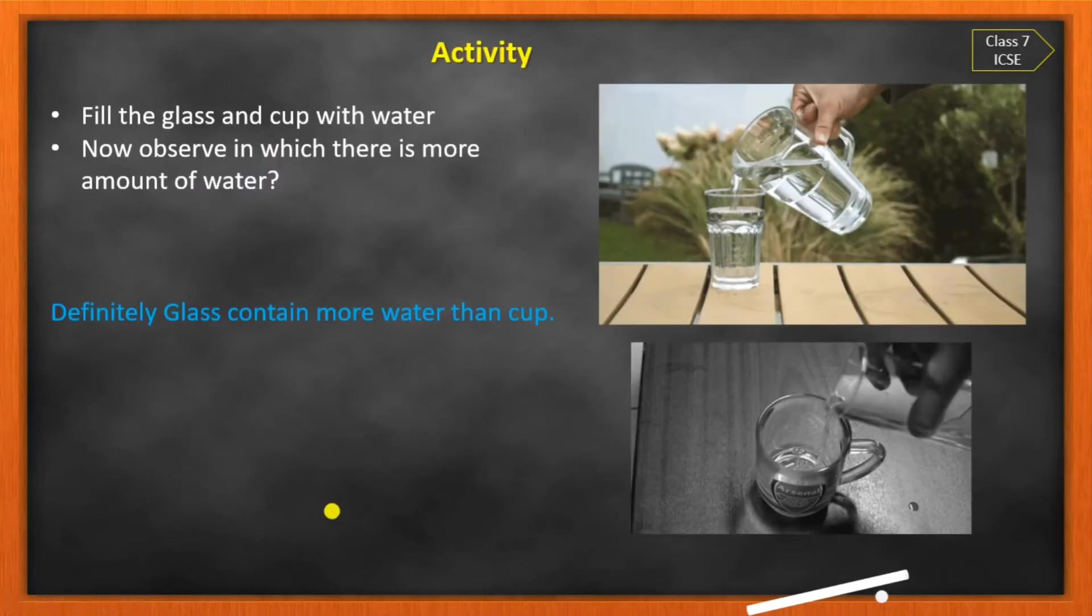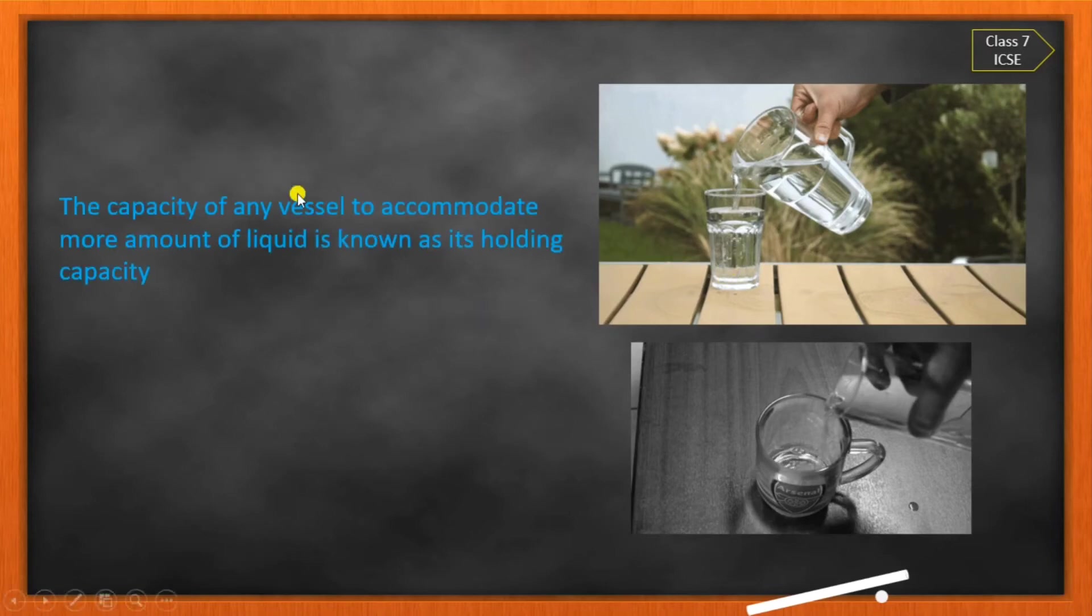Now we will see one activity. We need to take a glass or a cup and fill them with water. Now observe in which there is more amount of water. Definitely the glass, because glass will contain more water than a cup. So the capacity of any vessel to accommodate more amount of liquid is known as holding capacity. Here, the glass holding capacity is definitely more than the cup.